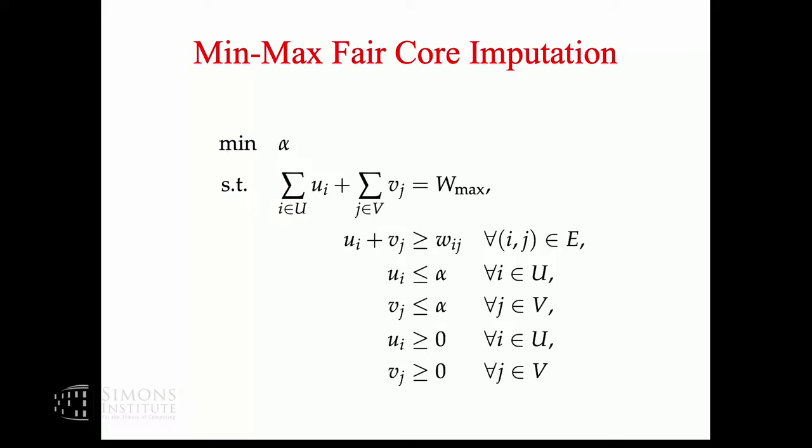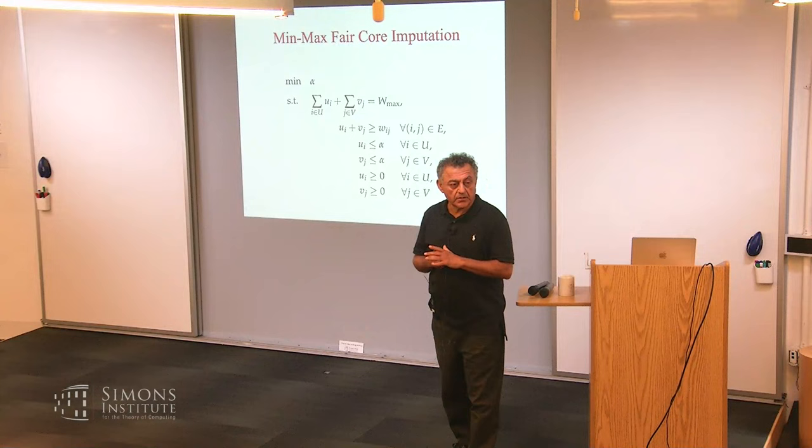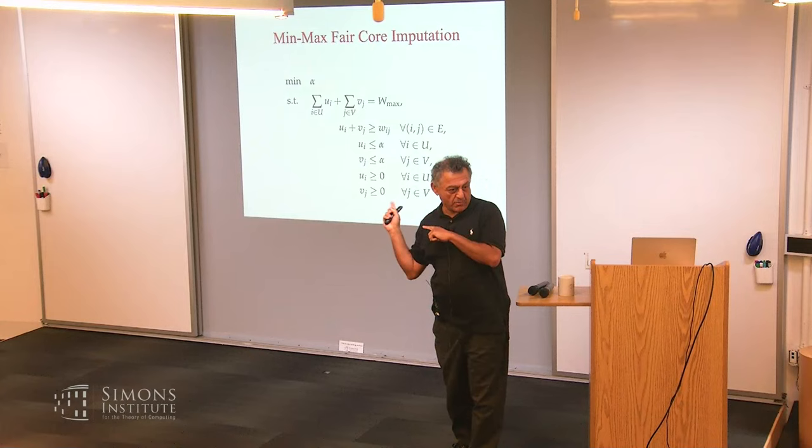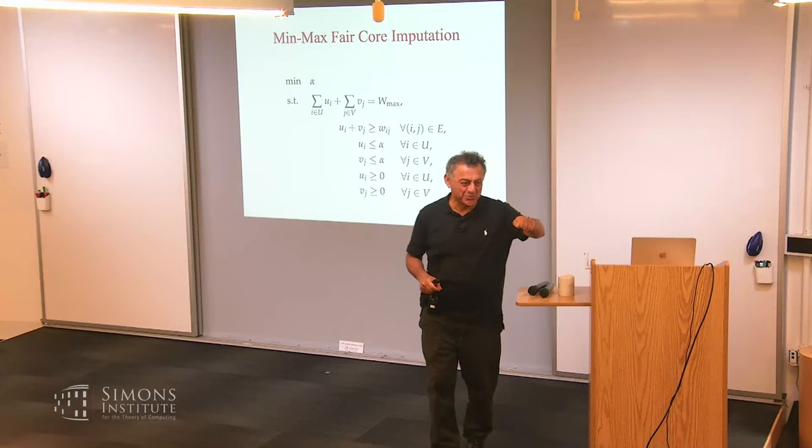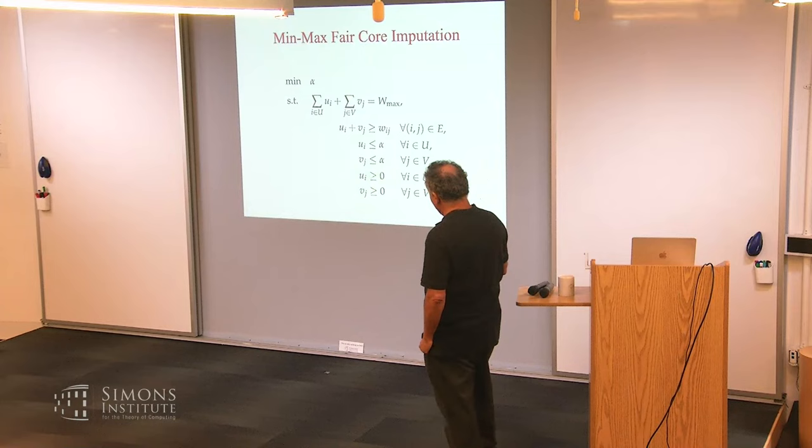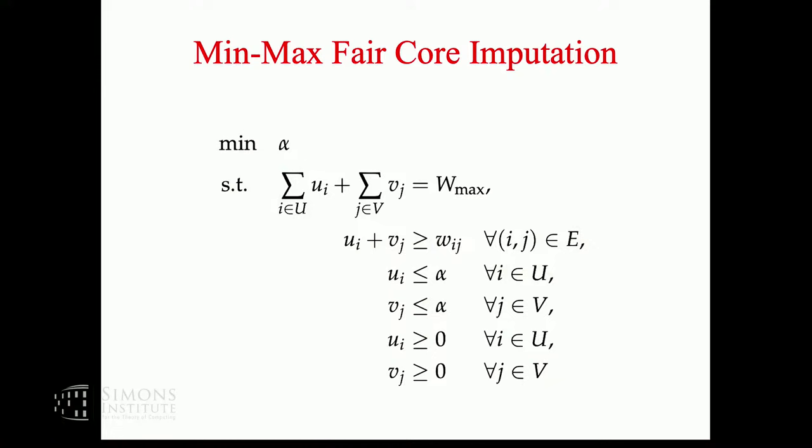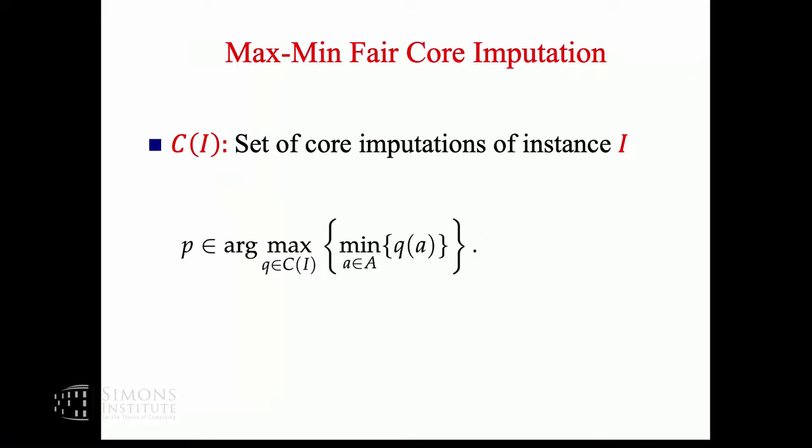These two conditions ensure this is an optimal dual solution because it has the right objective function value and the right constraints on edges. And upon that, we are minimizing alpha. How about max-min? We define that to be the core imputations that maximizes the minimum amount that a player gets. There's a similar LP that will do it, but will it do anything useful? The minimum amount of money that a player gets - can it be identically zero? If there's a non-essential player, that player will get zero always in every core imputation.